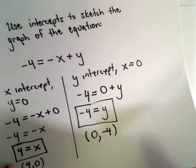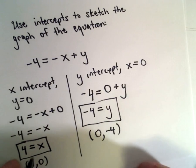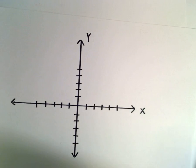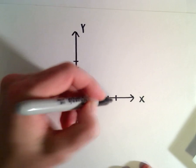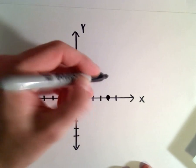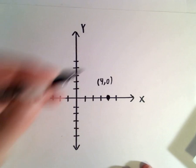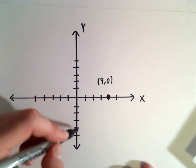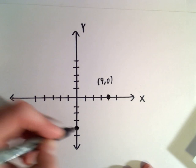Alright, well easy enough. So (4, 0)—so 1, 2, 3—there's (4, 0), and then we also said (0, negative 4), which will be sitting down here on the y-axis.